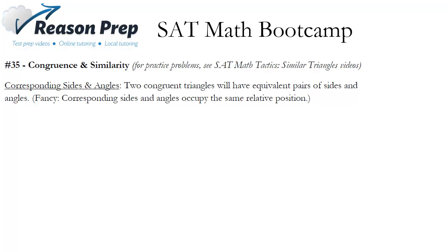In your geometry class, it's likely you took a lot of time to talk about congruent triangles and congruence, and that kind of proof work — not on the SAT. Congruence doesn't really show up much, but I do want to start off by defining what congruence means. Something congruent just means it's equal to something. So if I have two congruent sides, it means there are two sides that are equal. If I have two congruent triangles, it means two equivalent triangles — that's all.